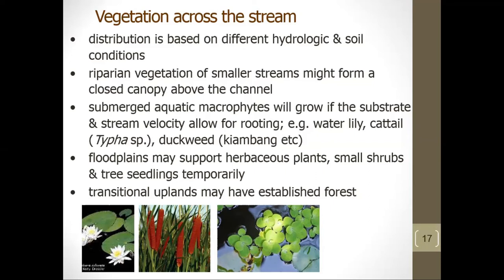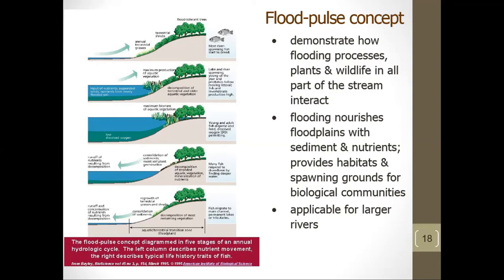Vegetation across the stream varies based on different hydrologic and soil conditions. Riparian vegetation of smaller streams might form a closed canopy above the channel. Submerged aquatic macrophytes such as water lily, cattail, and duckweed will grow if substrate and stream velocity allow for rooting. Floodplains may support herbaceous plants, small shrubs, and tree seedlings temporarily, while transitional uplands may have established forests.